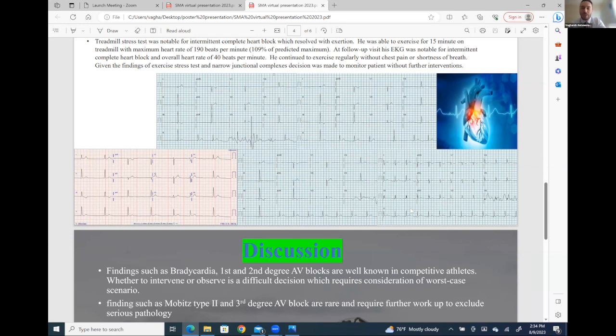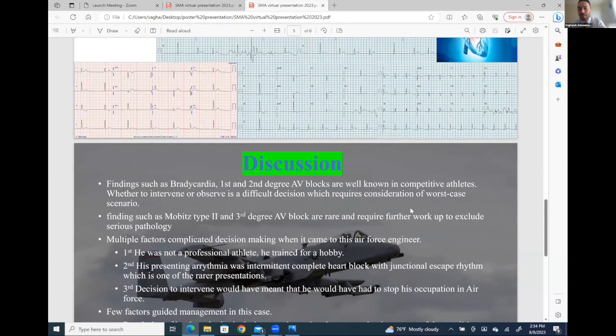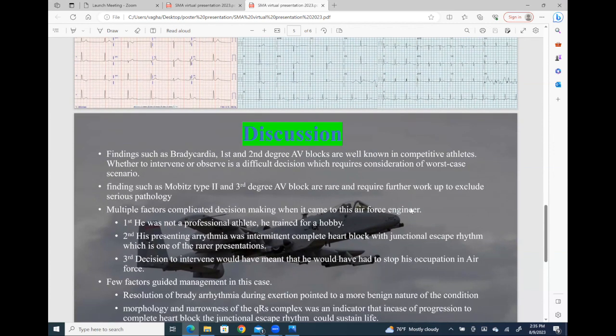Generally, findings of first and second degree AV blocks are common in athletes such as bikers and marathon runners, but usually we don't see it in people that just exercise recreationally at a hobby level. Even in typical athletes, second and third degree AV block are considered abnormal and require further work up. So in this case we had what seems like intermittent complete heart block, which was an interesting finding, that if you do an exercise stress test, patient developed sinus rhythm as he's working out.